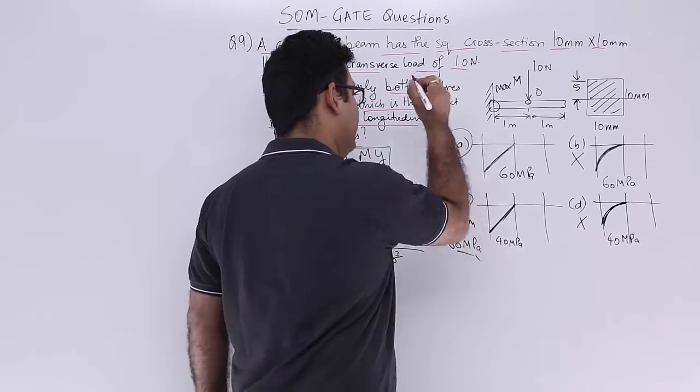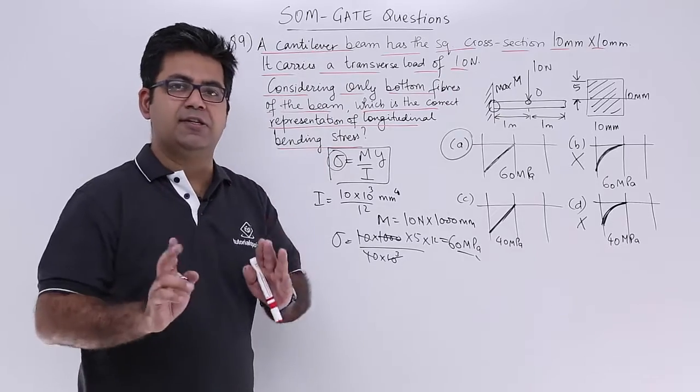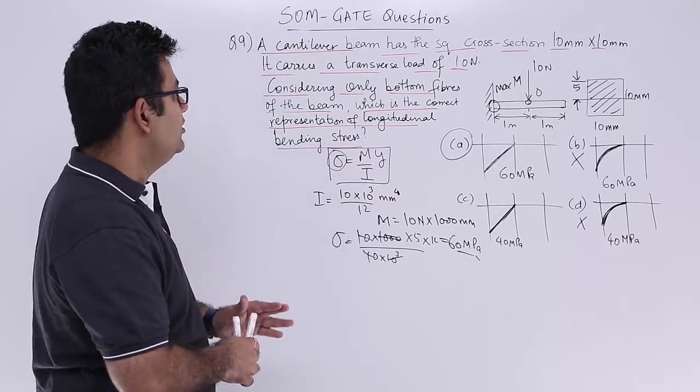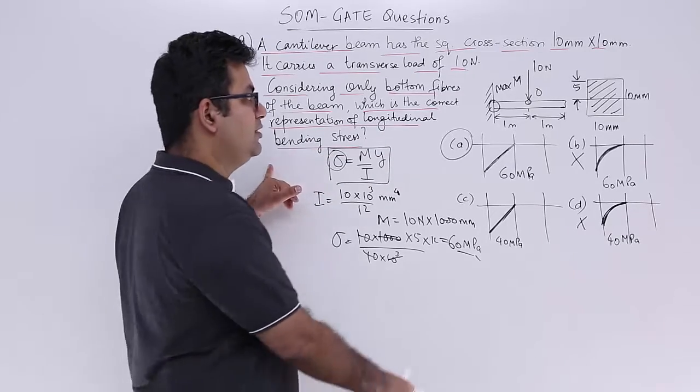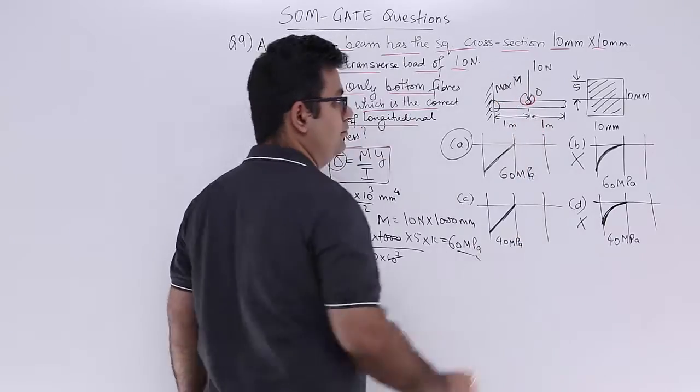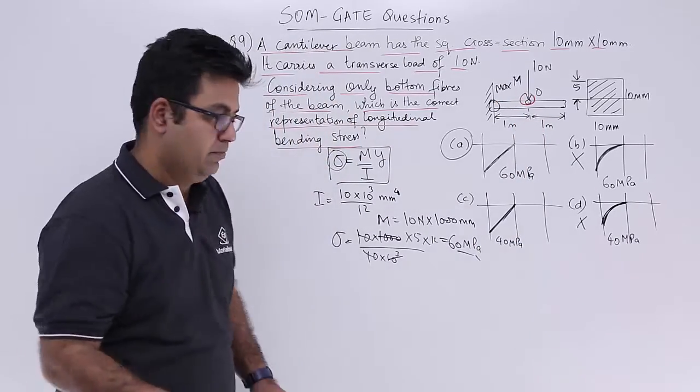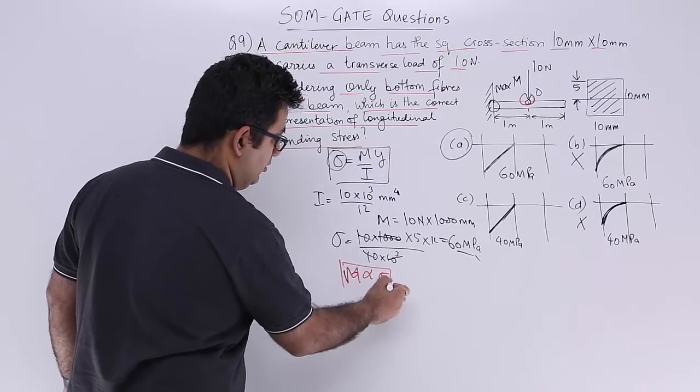So the answer is option A. Again a very simple but a very conceptual question. Because it is asking you to find the longitudinal bending stress variation. So it is very clear that your bending moment would be 0 at the center. So your bending stress would be 0. Because m is proportional to sigma.